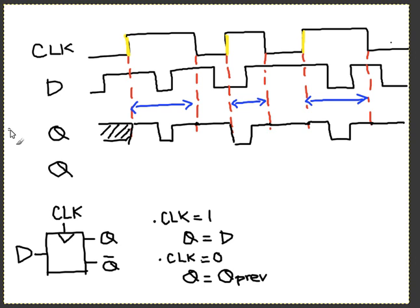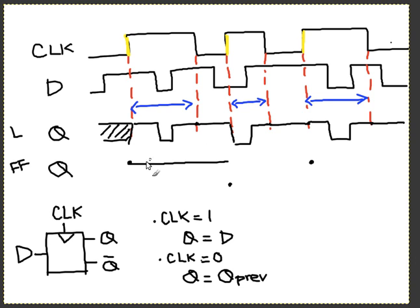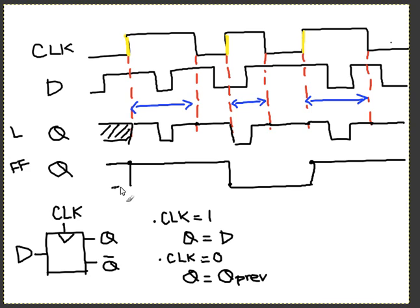Instead of looking at the whole interval, I'm just going to look at the value of D at the point where clock rises from 0 to 1. So I copy the value of D at that point — D is 1 here, D is 0 at this point, and D is 1 at this point. Then my value of Q just holds for the whole interval, and I connect from here to here, and hold again. In the beginning I don't know the previous Q, so it's either 0 or 1. That is my D flip-flop.